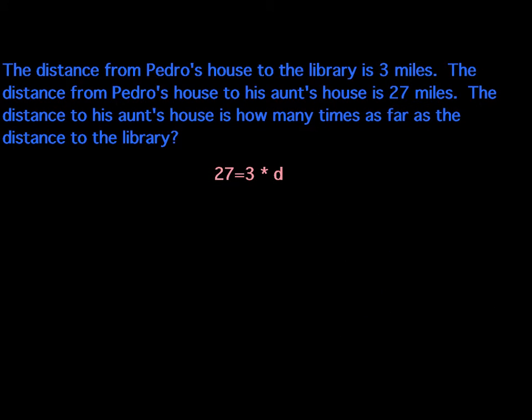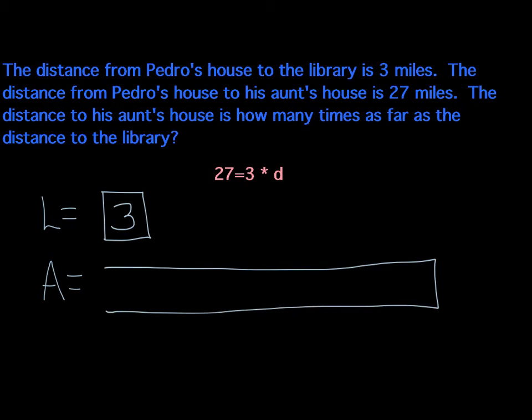So in looking at this problem, another way that we can try to solve it, again, is to use a picture or some kind of model. So let's say that L is going to represent the distance to the library, and A is going to represent the distance to Pedro's aunt's house. So the distance to the library is 3 miles. And then the distance to the aunt's house is 27. So basically, we're looking at how many threes are going to fit into 27. Or 3 times what equals 27.